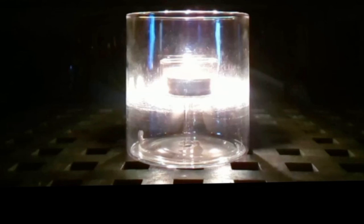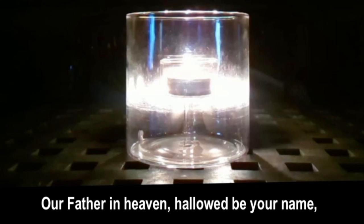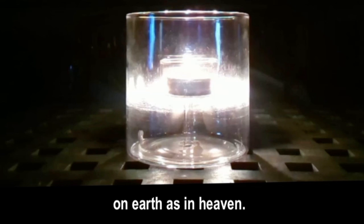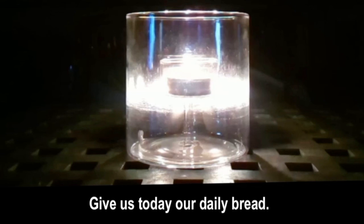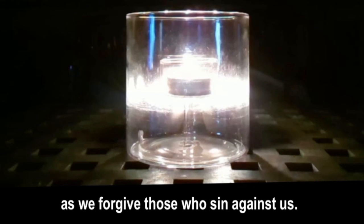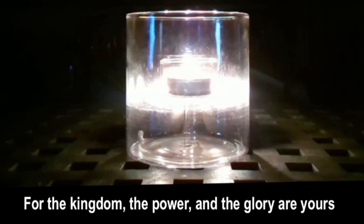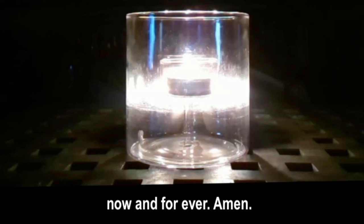And so we pray together: Our Father in heaven, hallowed be your name. Your kingdom come, your will be done, on earth as in heaven. Give us today our daily bread. Forgive us our sins, as we forgive those who sin against us. Lead us not into temptation, but deliver us from evil. For the kingdom, the power and the glory are yours, now and forever. Amen.